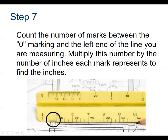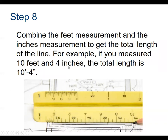Now we're back to our drawing. We were measuring from here to here and we got 10 feet. Now we need to figure out how many inches come before we get to our next foot. Combine the feet measurements and the inch measurements to get the total length. In this case, it measured 10 feet 4 inches, so the total length in architectural notation is 10' 4" — that's a single quote mark for feet and a double quote mark for inches.